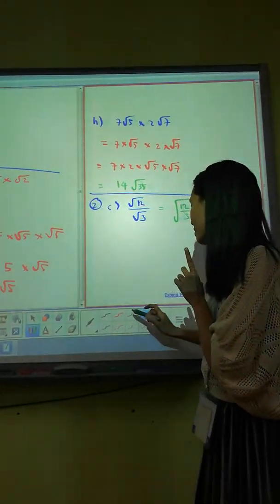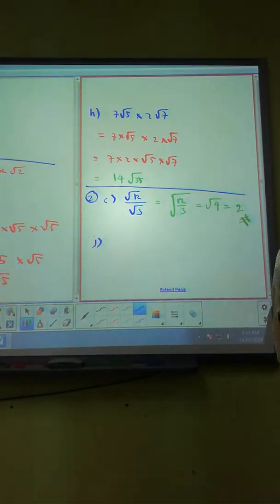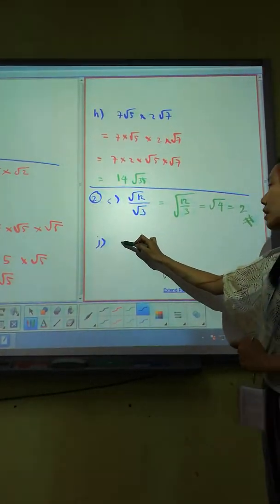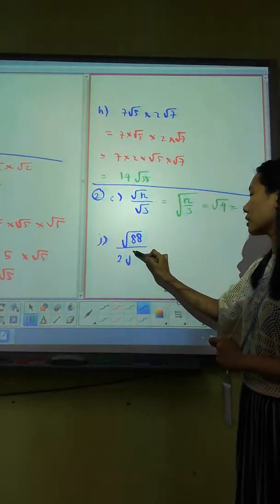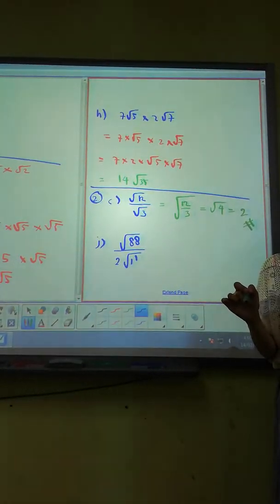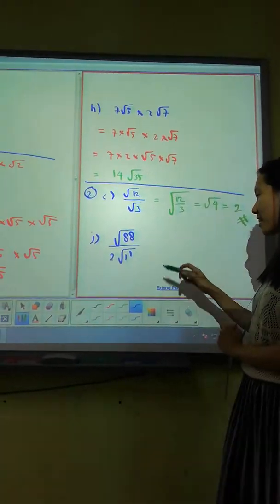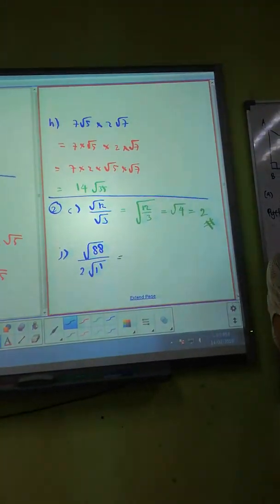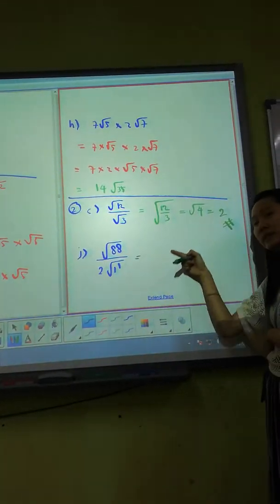That will bring us to our next thing that we remember. Okay, J is 3∛8 divided by 2∛11. So now here, how do you think you can, how are you going to do this?